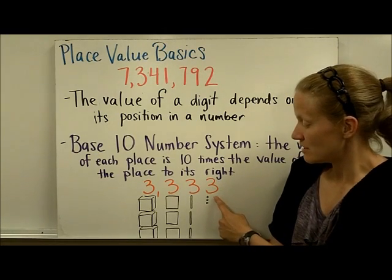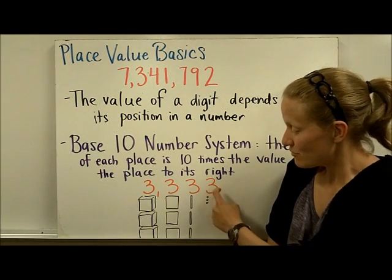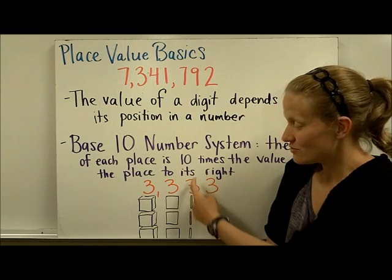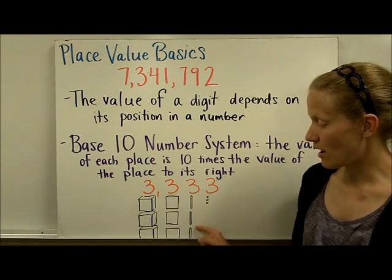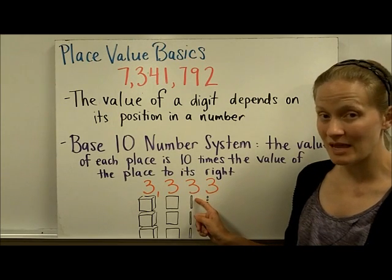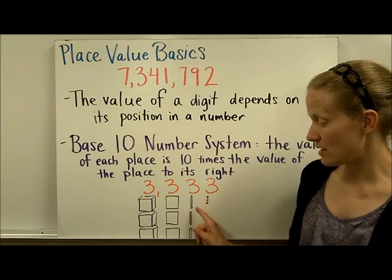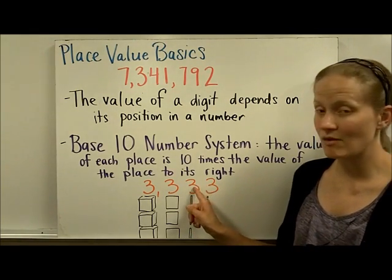These here represent the ones place. You multiply that 3 times 10, and this 3 is worth 30 in the tens place. And we're using 3 rods, each one of these is 10 little cubes stuck together. So 10, 20, 30 cubes—this 3 represents 30.